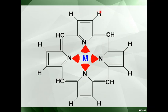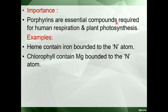Whenever we attach different groups, different types of porphyrins will be created. Porphyrins are essential compounds — they are required for human respiration, hemoglobin, myoglobin, and plant photosynthesis. Porphyrin contains chlorophyll. So both chlorophyll and hemoglobin contain porphyrin. The difference is that heme contains iron, whereas chlorophyll — which is required for photosynthesis — contains magnesium. Either iron or magnesium is bonded to the nitrogen atom.